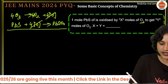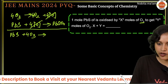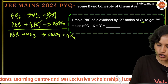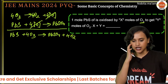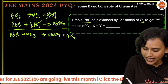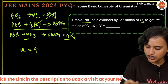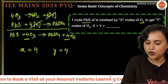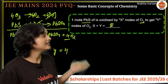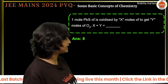So PbS + 4O₃ → PbSO₄ + 4O₂. Therefore x = 4 (moles of ozone) and y = 4 (moles of O₂ produced). So x + y = 4 + 4 = 8. The answer is 8. We didn't even need to calculate much — just balance the equation.